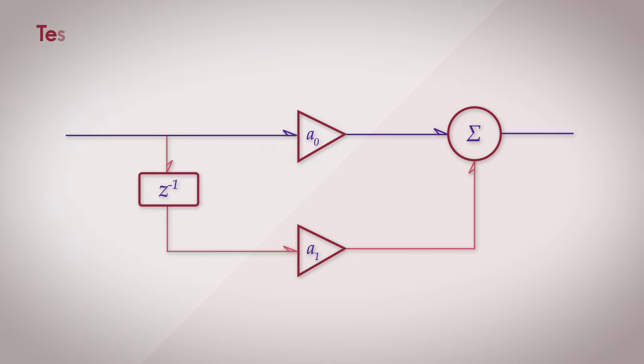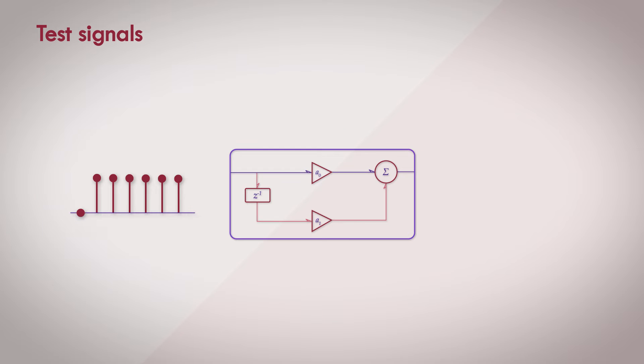We discussed the digital test signals that we'd use in the previous video. The approach here is to take each one of these signals, manually push the samples of the signal through the filter, one sample at a time, and study the output.